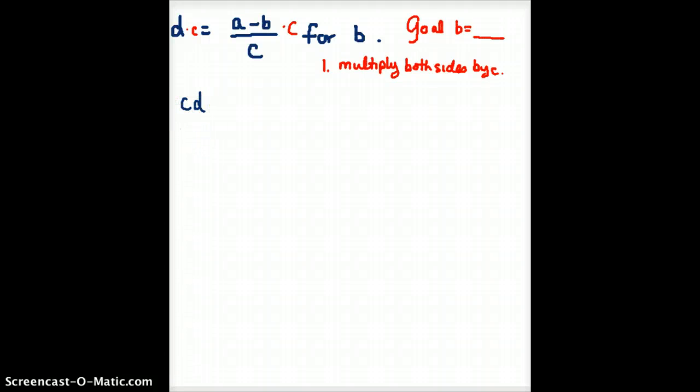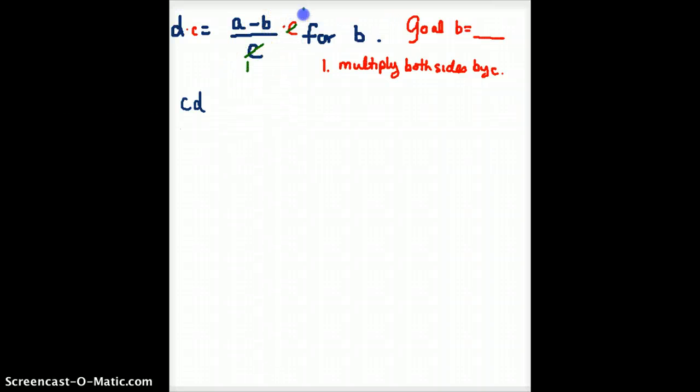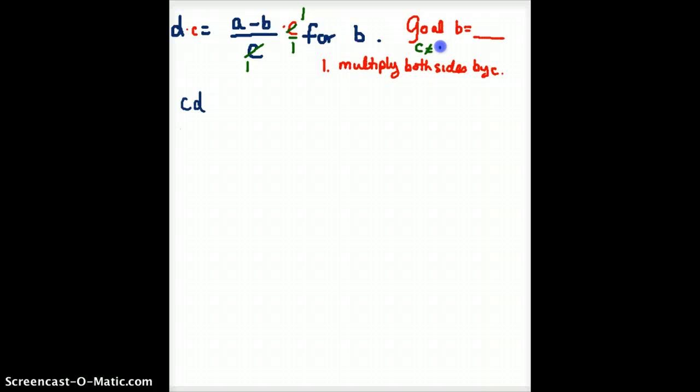And then, on the right hand side of the equation, the C goes into itself one time, as long as it's not zero, because we can't divide by zero. This problem really couldn't be resolved if C were zero, so we'll just have to assume that C is not zero. If C is not zero, then C goes into itself one time. Some students like to think of the C here as being C over one. We'll just make a note here that C cannot be zero. Sometimes they will tell you this in the problem, and other times they will not.